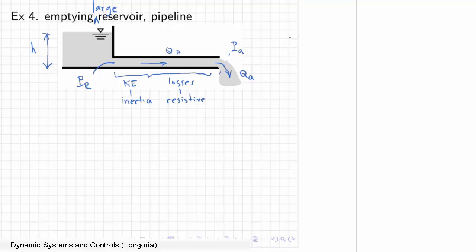To a simple word bond graph, you have the reservoir. And because we know that the inertia and the resistance have to have the same flow variable, and in this case power is coming in from the reservoir. This is going to be a source of pressure. It's going to be kinetic energy storage, resistive effects. And then we could say that it empties into atmosphere.